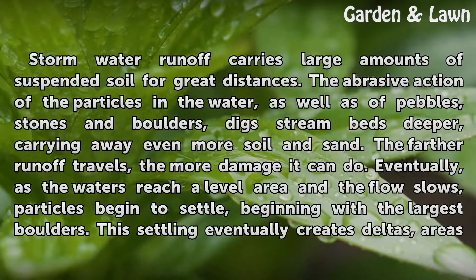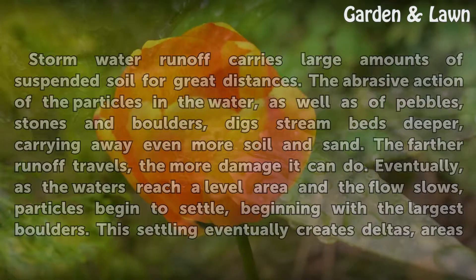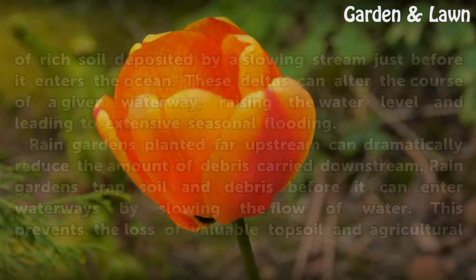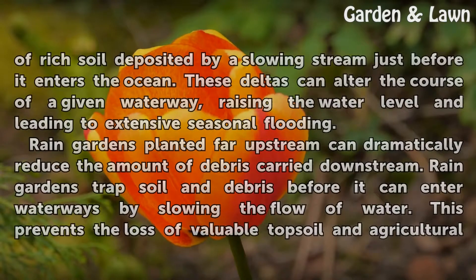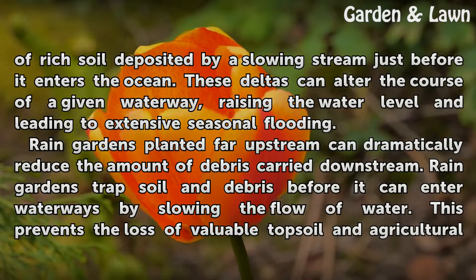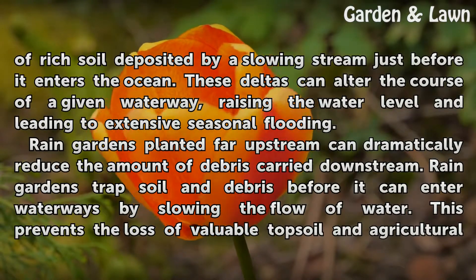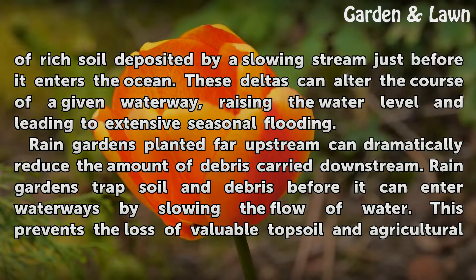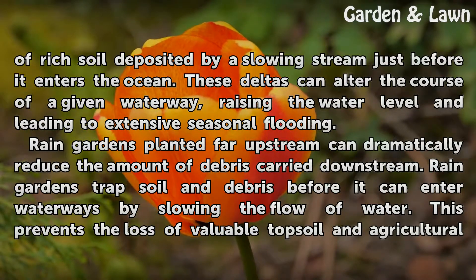Eventually, as the waters reach a level area and the flow slows, particles begin to settle, beginning with the largest boulders. This settling eventually creates deltas — areas of rich soil deposited by a slowing stream just before it enters the ocean. These deltas can alter the course of a given waterway, raising the water level and leading to extensive seasonal flooding.